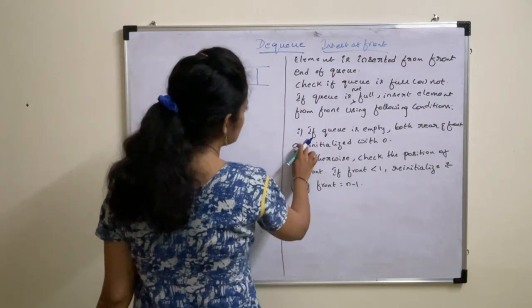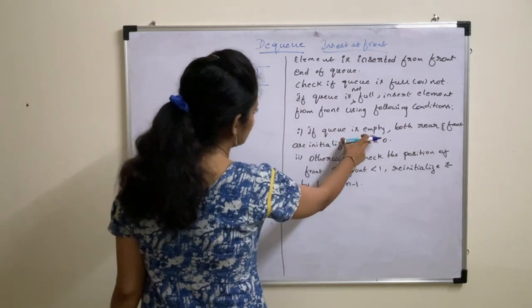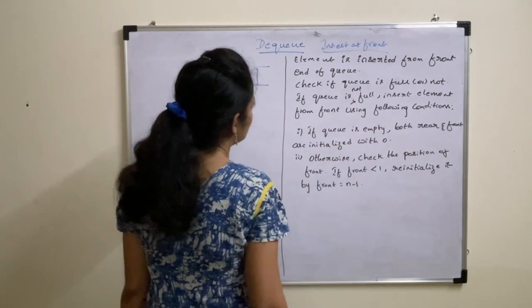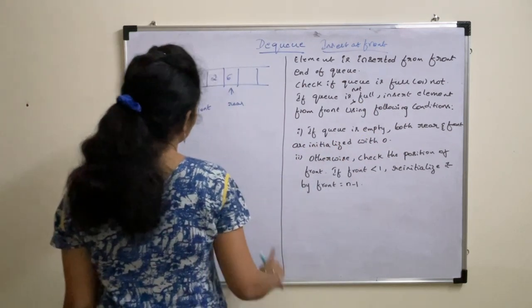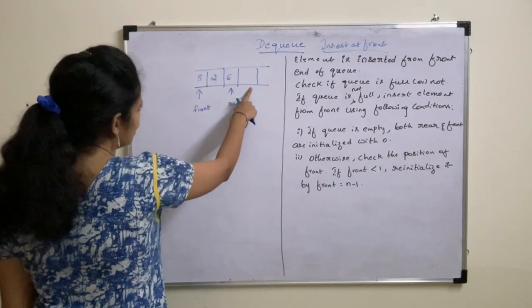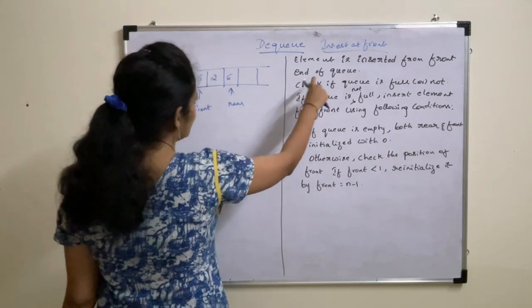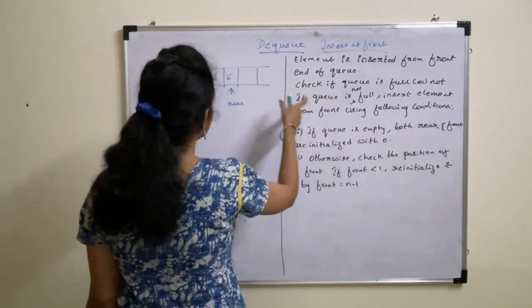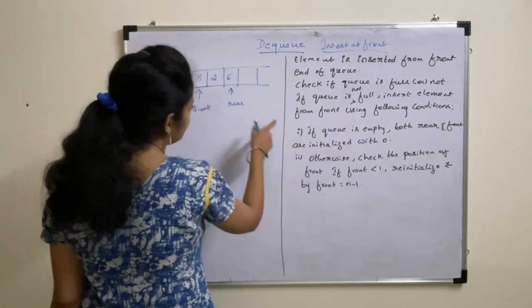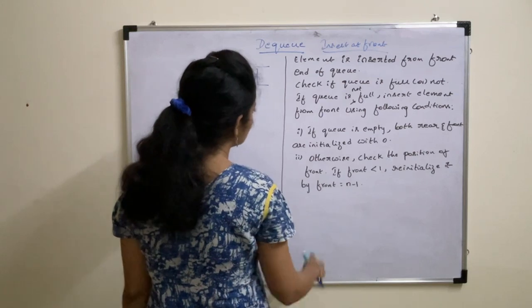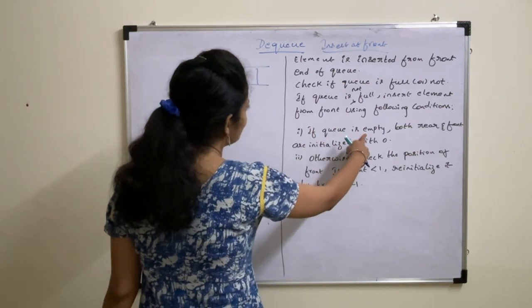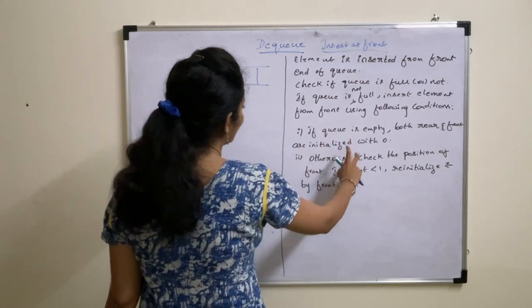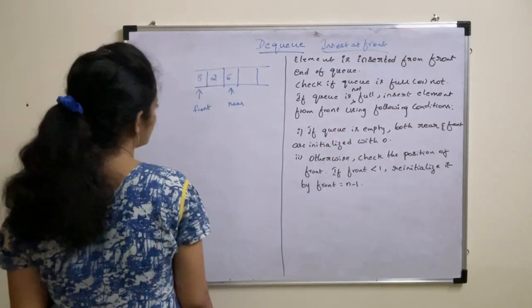The first condition is: if the queue is empty, then initialize both front and rear to 0. If the queue is not full and also not empty, then check the position of the front.